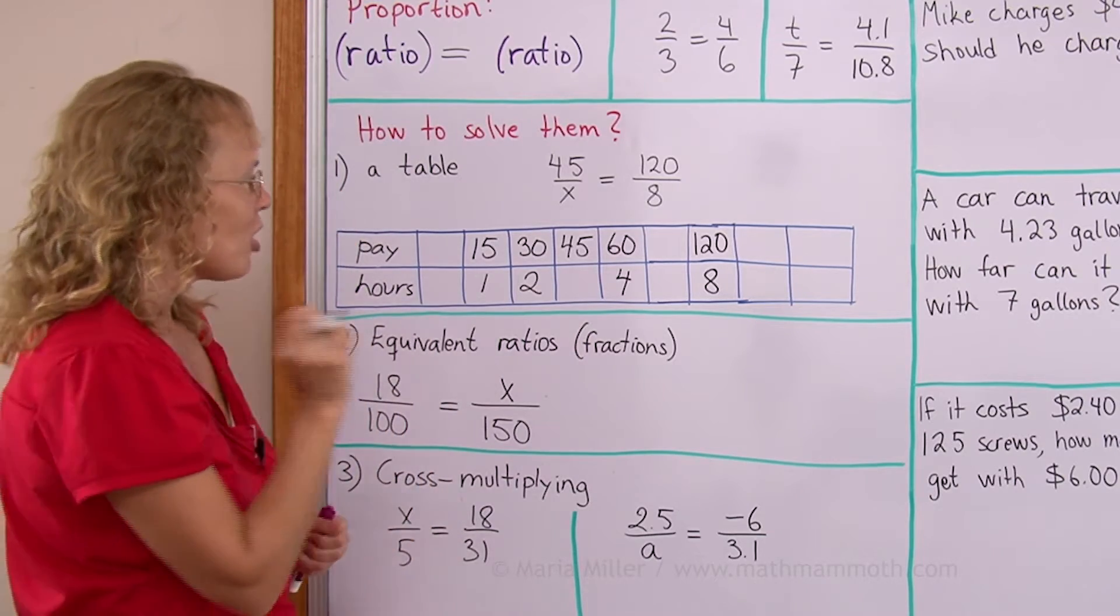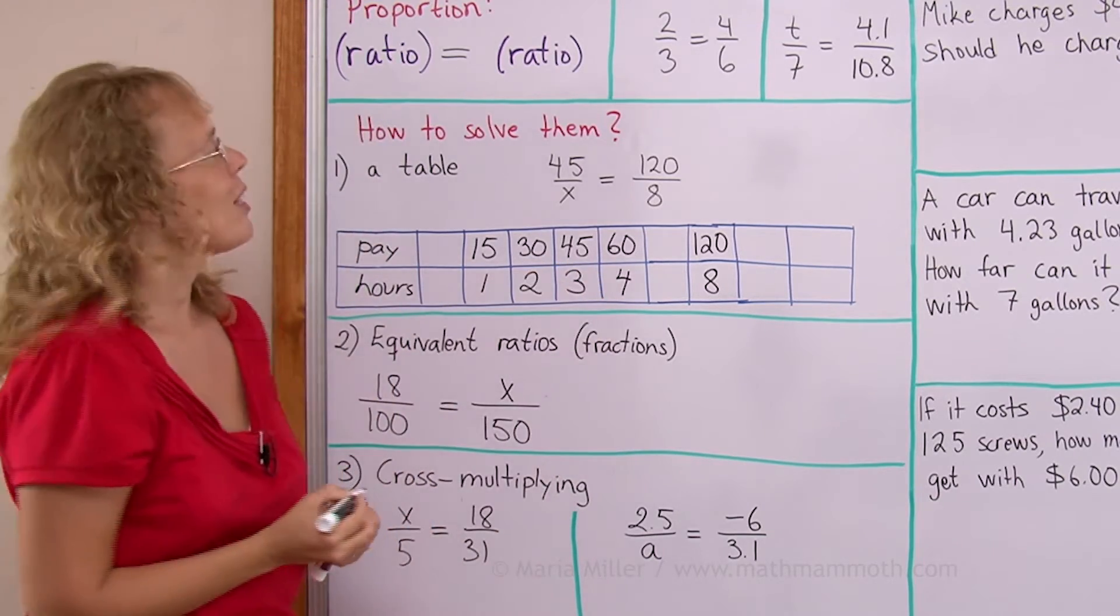For 45 dollars, you would have to work three hours, okay? So x equals three.